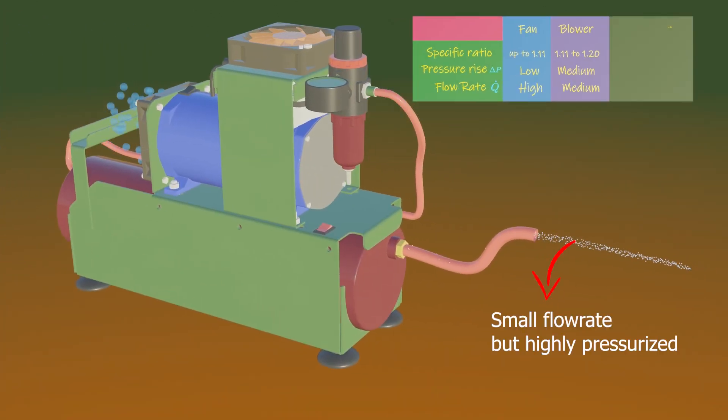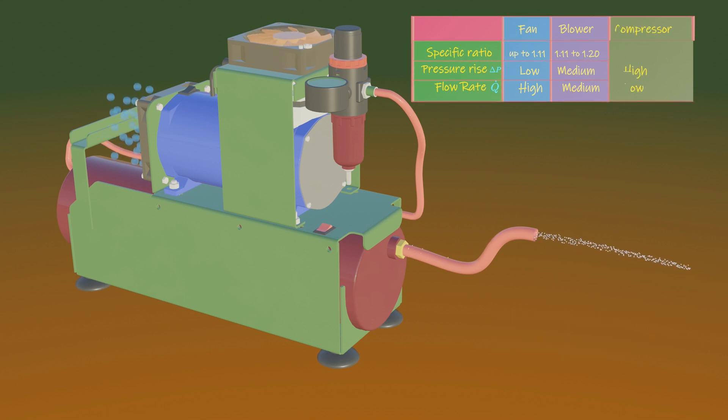A compressor is a gas pump designed to deliver a very high pressure rise, typically at low to moderate flow rates. It crams air into a small space, which makes the air denser. It is used for applications where the required pressure rise is greater than 1.2.